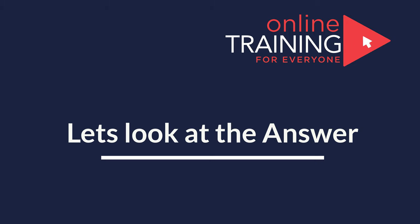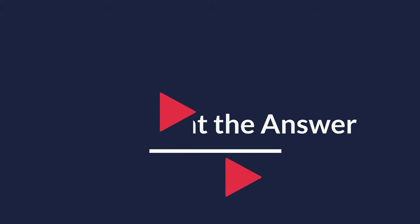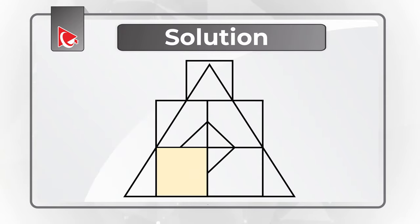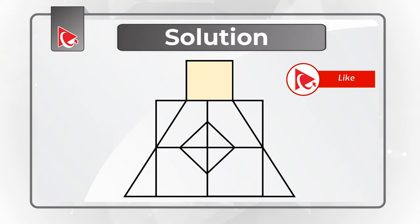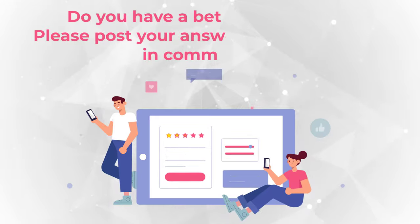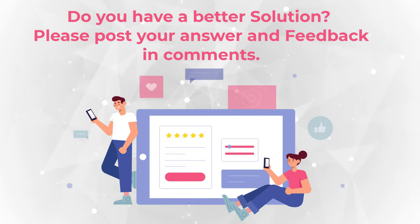I counted 7 squares, so my answer is Choice A. Let me show them all to you: 1, 2, 3, 4, 5, 6, and 7. Do you have a different number? Please make sure to post your solution in comments. And if you need more questions like this, please make sure to check out the description for additional resources.